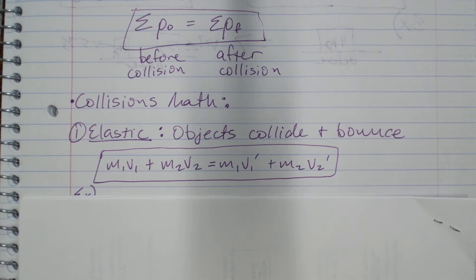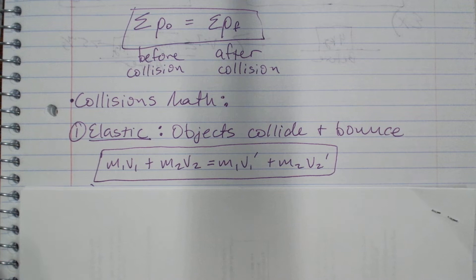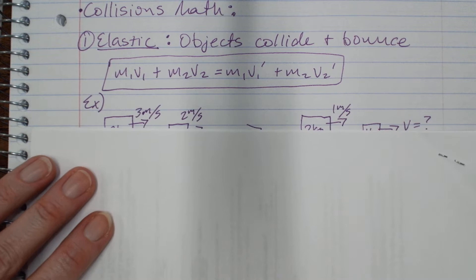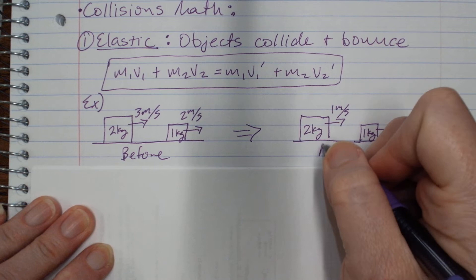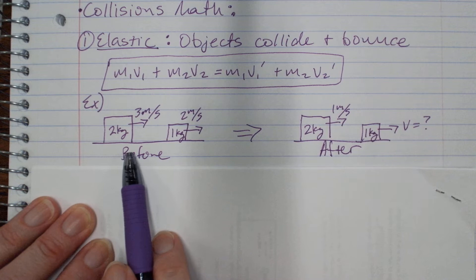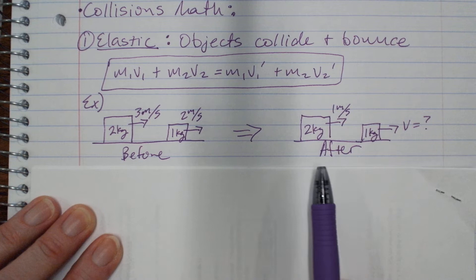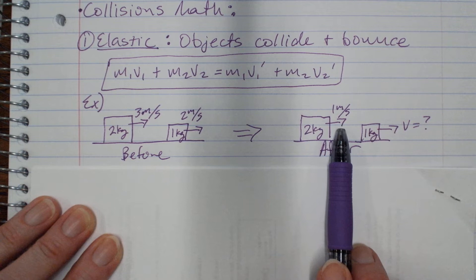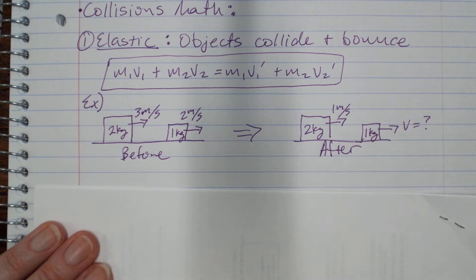Here's an example. You have a two kilogram mass traveling at three meters per second to the right, and a one kilogram mass traveling at two meters per second to the right. They collide, and afterwards the two kilogram object is going one meter per second still to the right. We want to know how fast the one kilogram object is going after the collision.